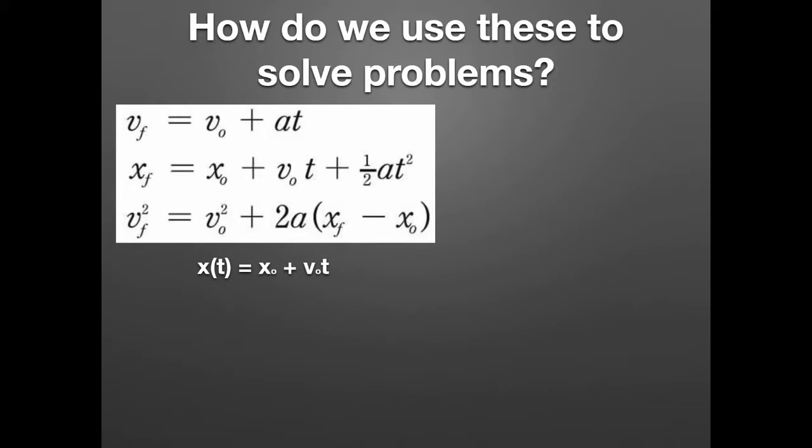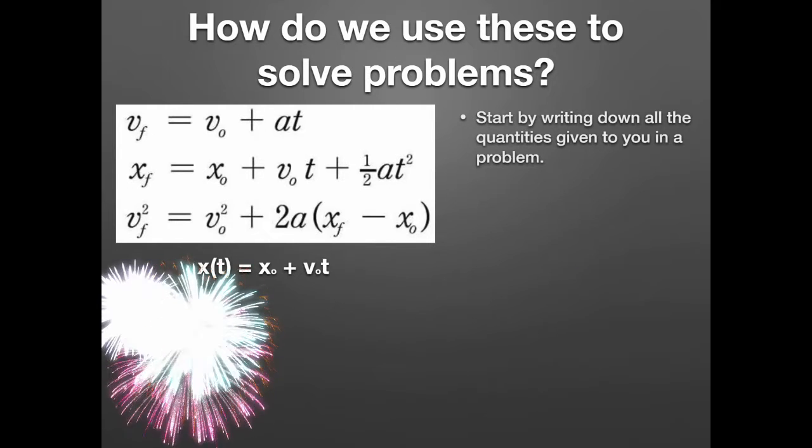So how do we use these? A lot of students know them but don't know how to use them because they don't know where to start. These equations, by the way, do not forget that they are used only when acceleration is a constant. You cannot use them when you have variable acceleration values throughout your trajectory. So back to the question: How do we use these to solve problems? Where do we begin? When you have the problem in front of you, I want you to start by writing down all the quantities given to you in the problem in a list.